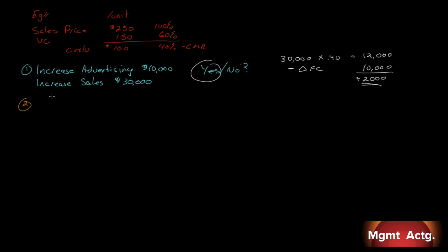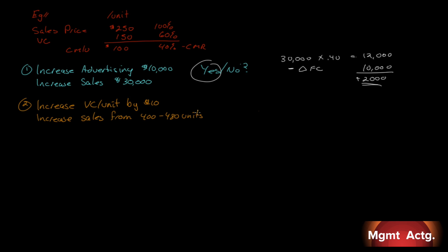Let's try another one. Let's say that we want to make a better product, so we're going to use better parts — we increase our variable cost per unit by $10. Our product manager says if we do this, the increase in quality should increase sales from 400 units to 480 units. So we'll sell 480 units instead of 400, but each one is going to cost us $10 more. Should we do it?